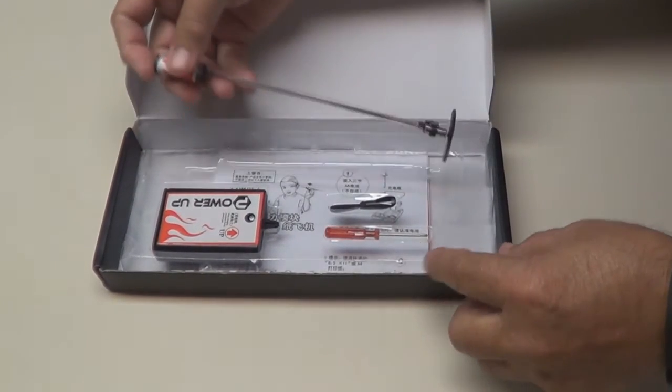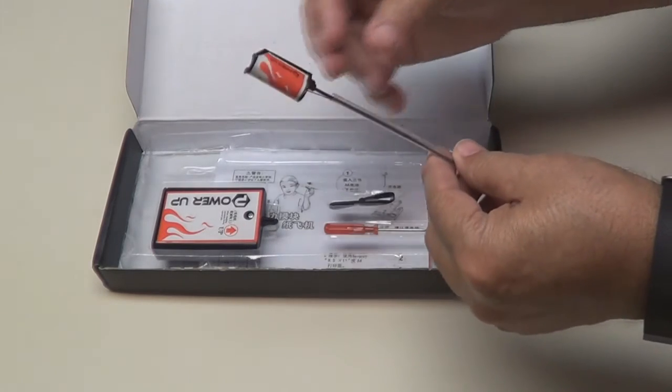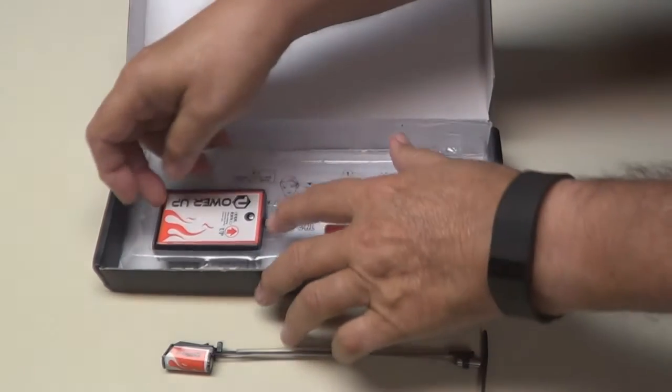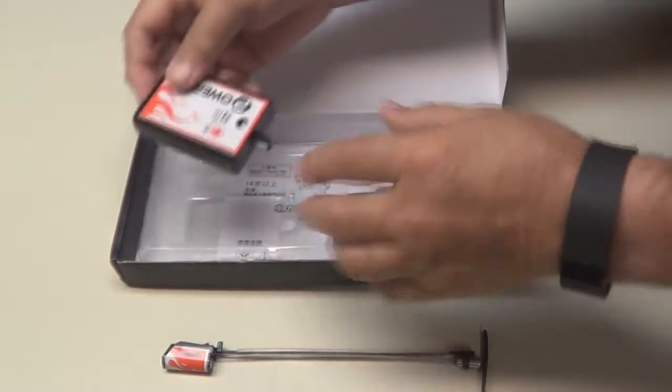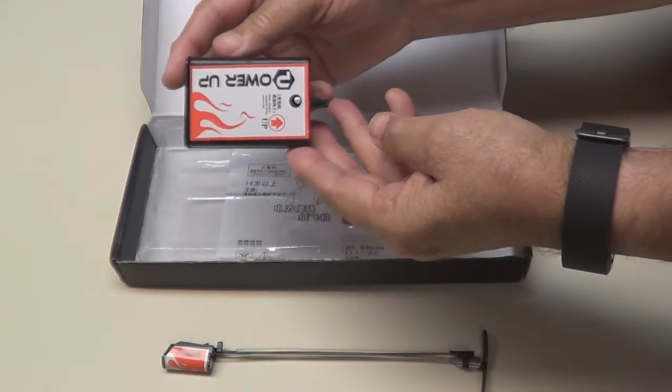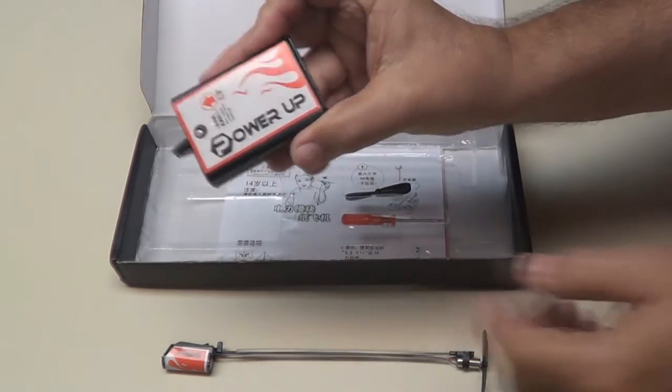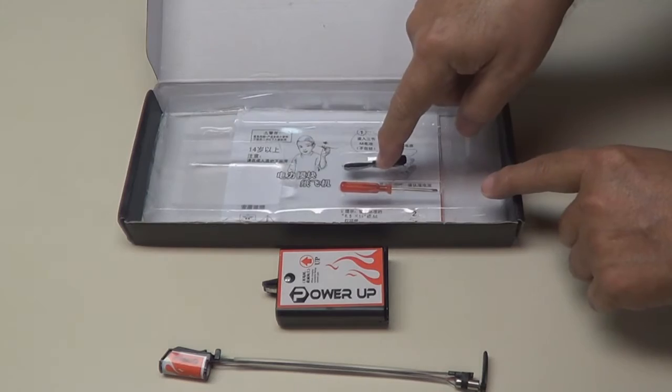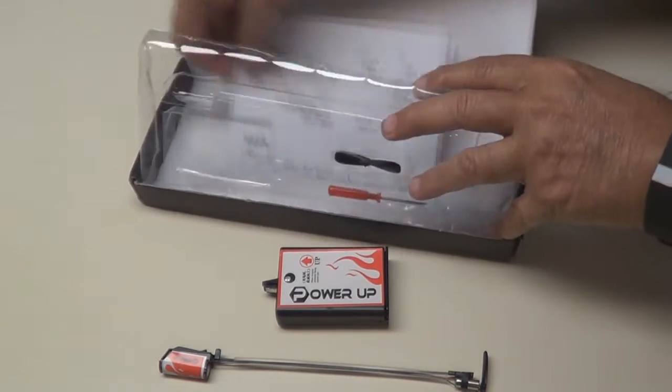Here is your rechargeable battery with your propeller. This powers the plane. This looks like the battery charger, see it says PowerUp. Comes with a screwdriver and a spare propeller.